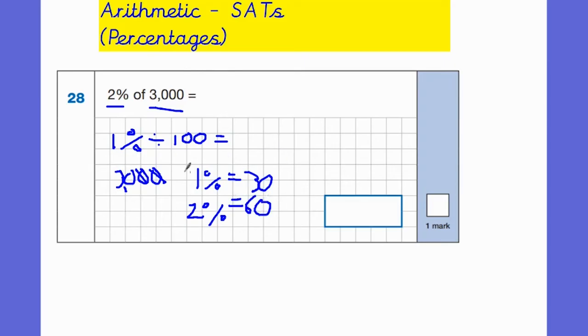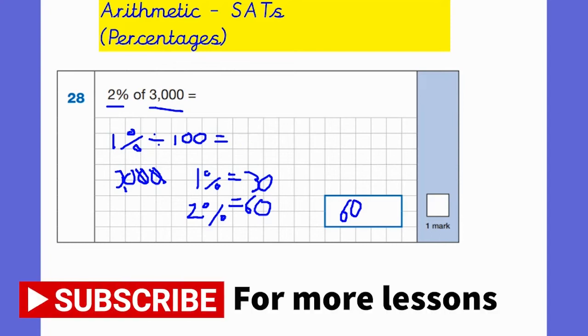That's another way you can solve a percentage of amounts question. But even this way here, children still prefer to do 2 times 3,000, which is 6,000, and then divide the answer by 100, which is 60. Let's have a look at one more question for percentages.